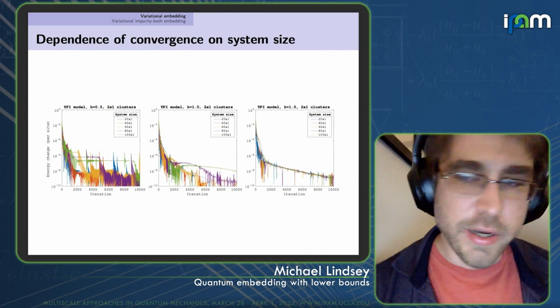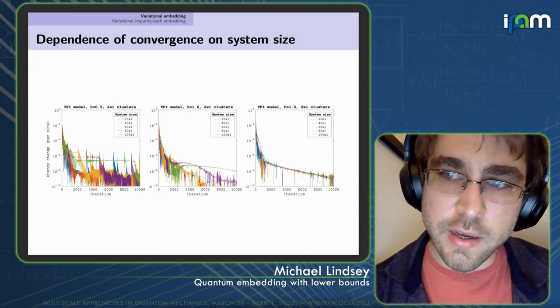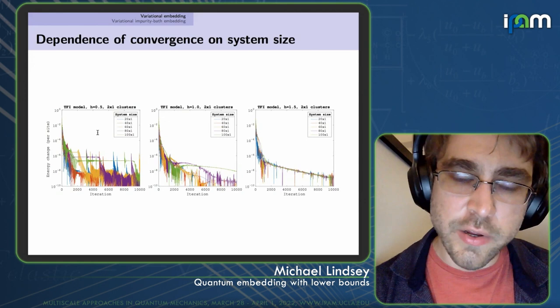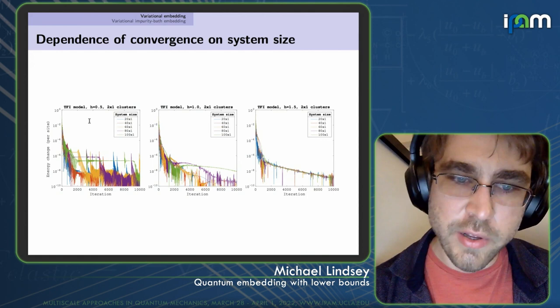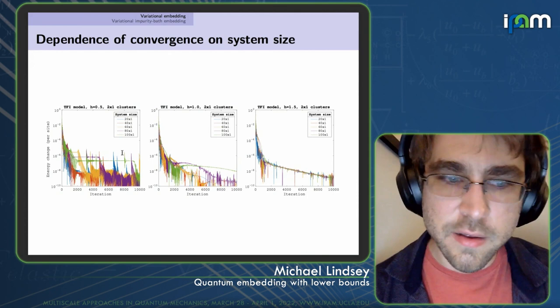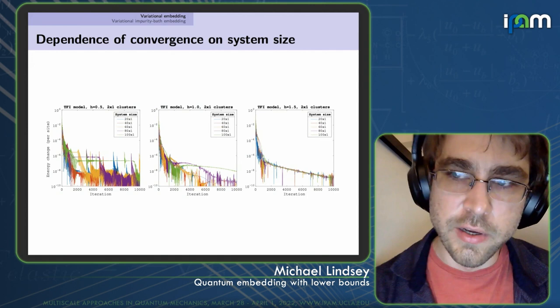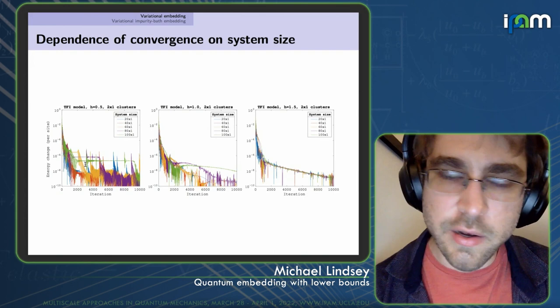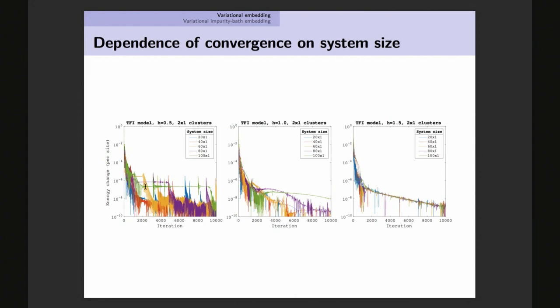Checking performance, we look at convergence as a function of iteration count for several values of H in the TFI model across different system sizes (different lines). With this augmented Lagrangian approach, you often see wacky convergence plots, but if tuned to the problem they tame. The important point is that you get many digits of accuracy quickly, typical of augmented Lagrangian approaches, and there isn't any obvious dependence of convergence on system size. Likewise, convergence does depend on cluster size, as expected.